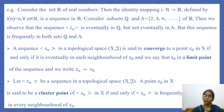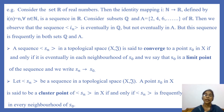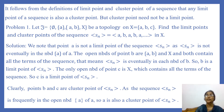Let S_n be a sequence in a topological space (X, T). A point S_0 in X is said to be a cluster point of the sequence S_n if and only if the sequence is frequently in every neighborhood of S_0. Since if a sequence is eventually in any set it is also frequently in that set, it follows from the definitions that any limit point of a sequence is also a cluster point. But a cluster point need not be a limit point.